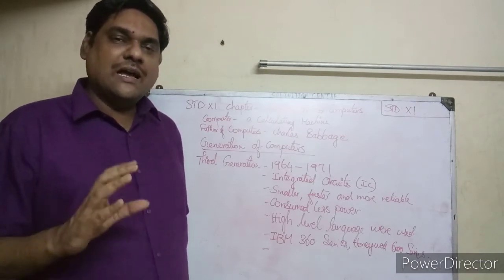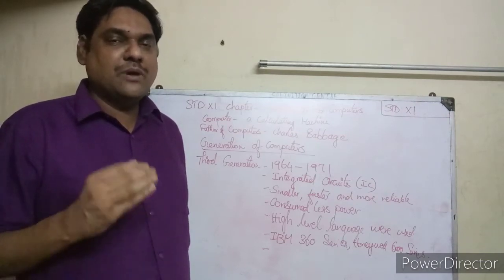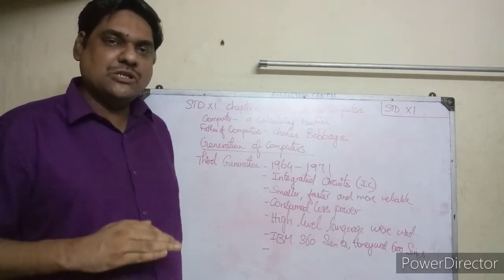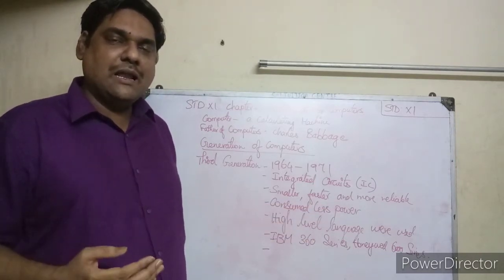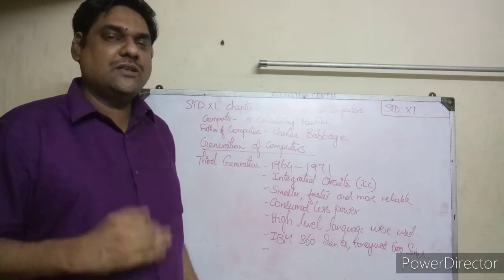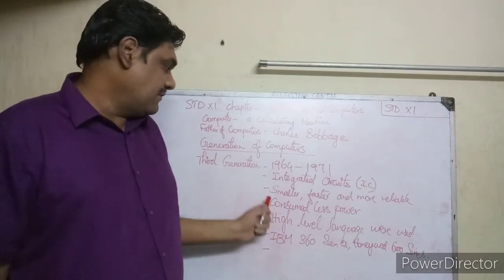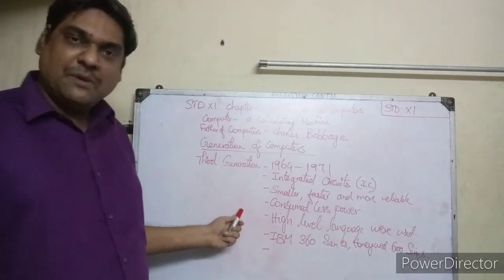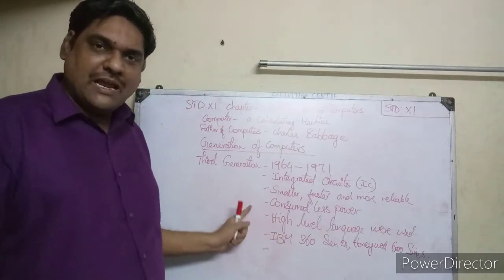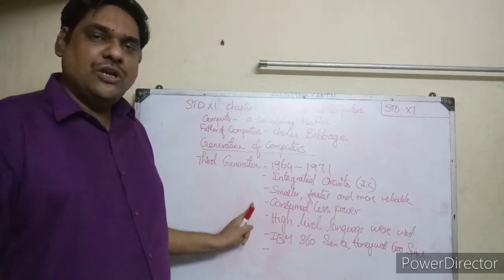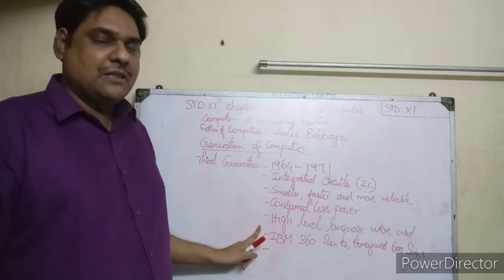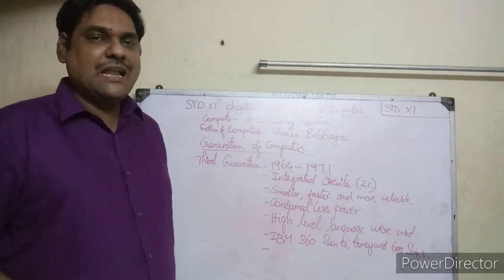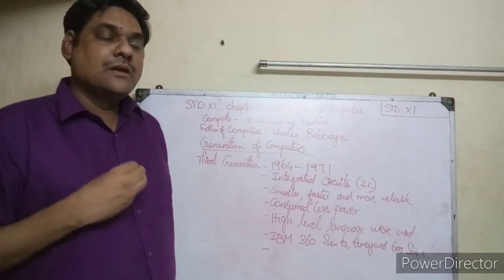Third generation computers gave more accurate answers. Previous generation computers would overheat and give wrong answers, but third generation computers gave correct answers. They also used less electrical power and generated less heat. High-level languages were used for programming.